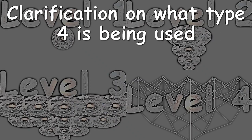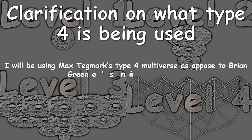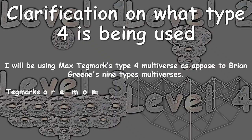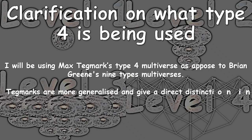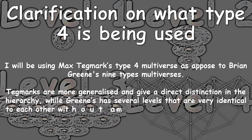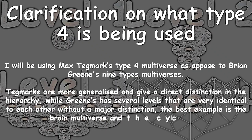Let's do a clarification on what Type 4 multiverse is being used. I'll be using Max Tegmark's Type 4 multiverse as opposed to Brian Greene's 9 types of multiverses. Tegmark's are more generalized and give a direct distinction in the hierarchy of multiverses, but Greene's has several layers that are very identical to each other without major distinction — the best example being the Brane multiverse and the Silicon multiverse.